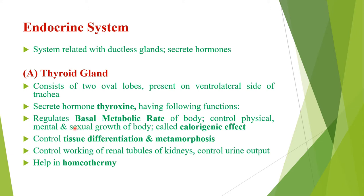The thyroid gland consists of two oval lobes which are present on the ventrolateral side of the trachea. These lobes are connected with a glandular band called the isthmus. This gland secretes the hormone thyroxine, which has the following functions: it regulates the basal metabolic rate of the body, controls cell respiration and energy production in mitochondria, and controls physical, mental, and sexual growth — an effect called the calorigenic effect.